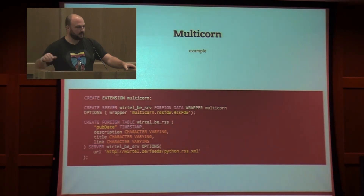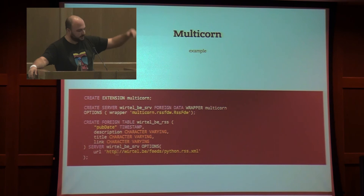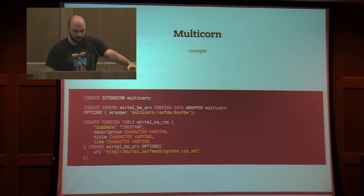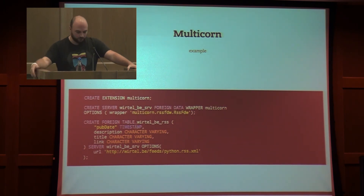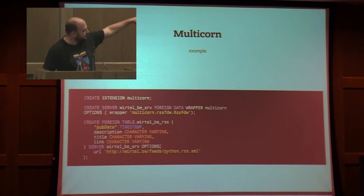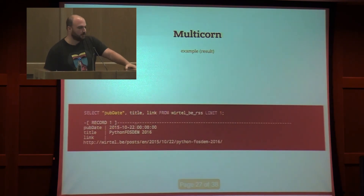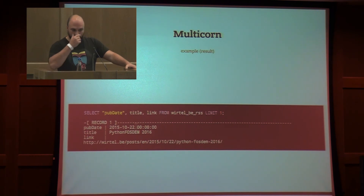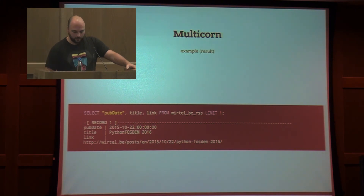Small example. I'm using the Multicorn extension — just create this extension in Postgres, create a virtual server where I specify the data wrapper, and then create a new table. It's a virtual table where you can interact with an external server. In my case, I get some information from my RSS feeds and I can query them in Postgres with a SELECT. You can imagine fetching data from SQL Server or any other source.